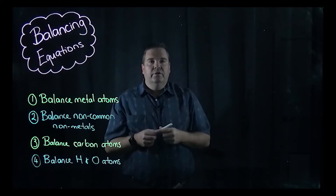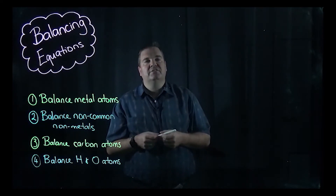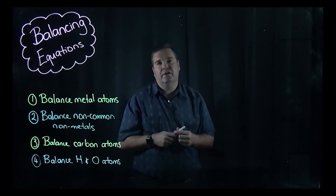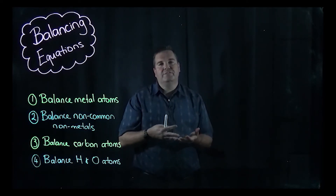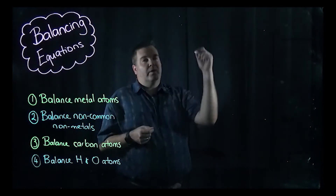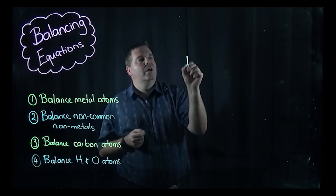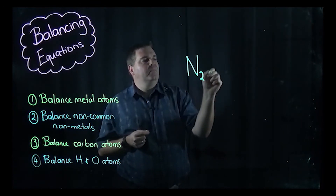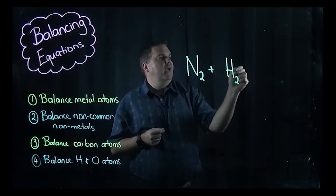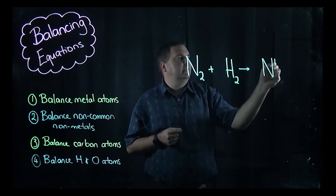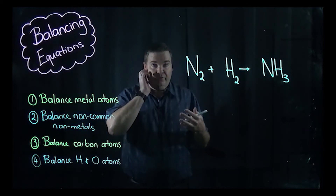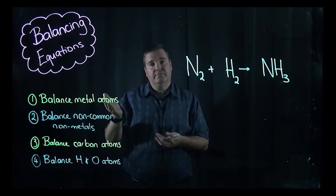I'll start with a couple of simple equations and ramp up to more complex ones — probably get through four. Best advice: do it in pencil, and when writing out the equation, leave a bit of room in front of each species for your numbers. The first equation is quite common in industry: nitrogen gas reacting with hydrogen gas to produce ammonia, NH3.